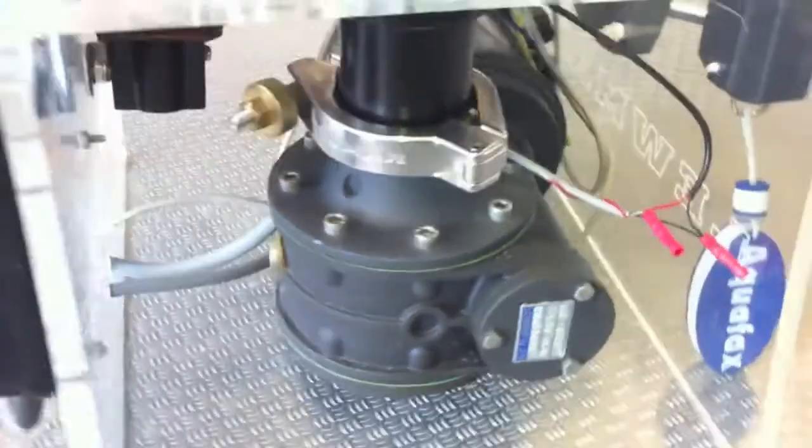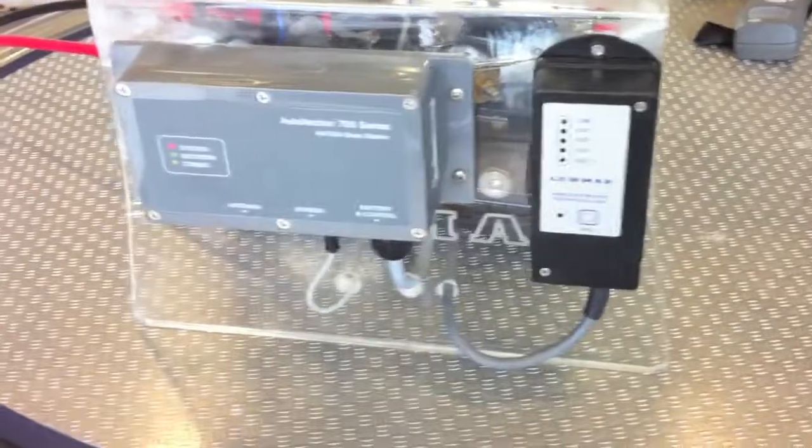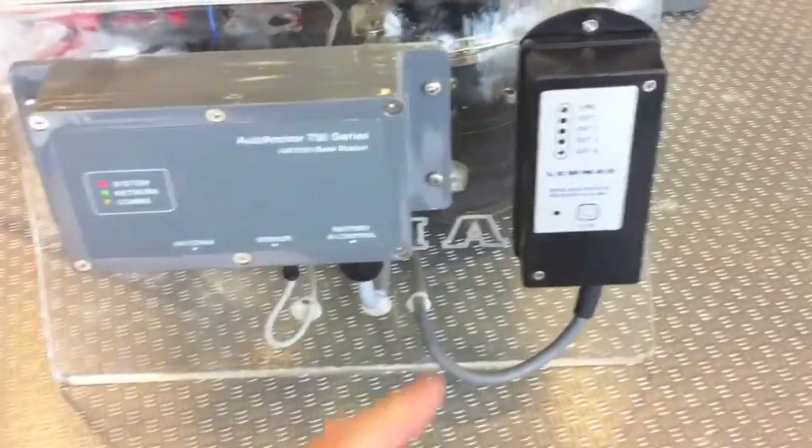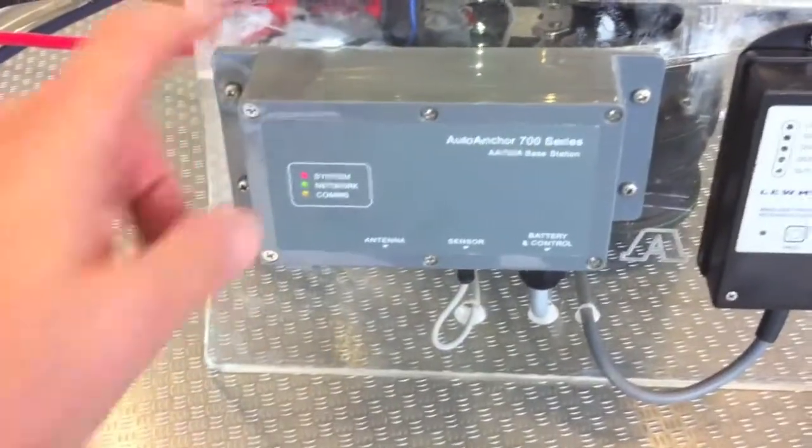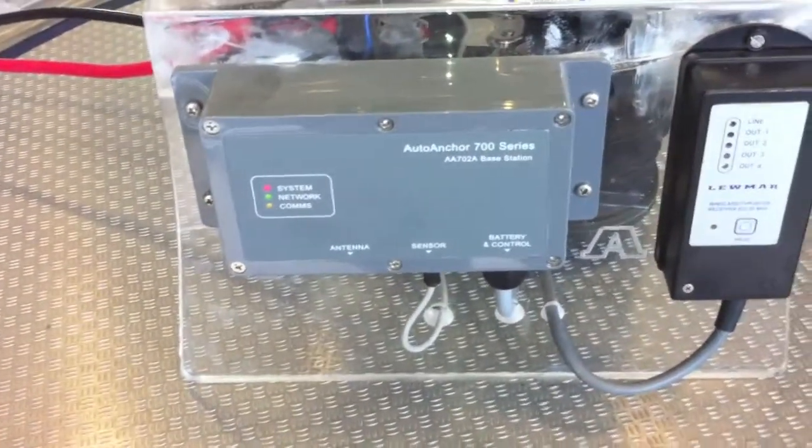Moving round, on the side here, we have mounted two transmitters for wireless remotes. This is the transmitter for our basic wireless remote. This one is for the AA710 wireless chain counter.